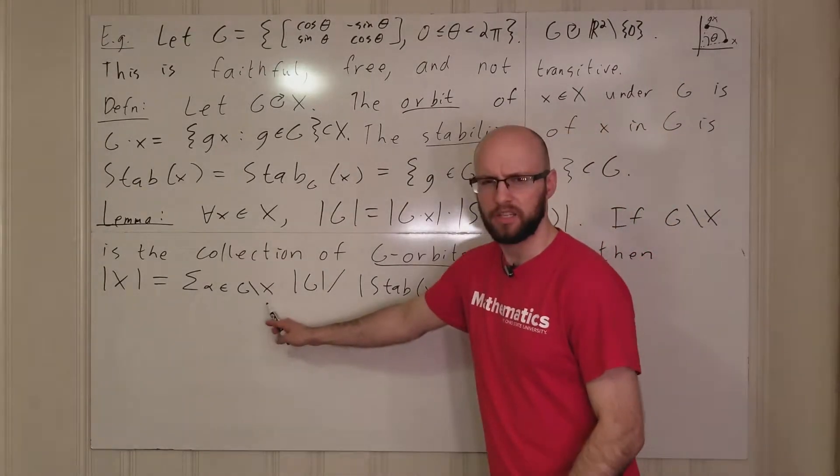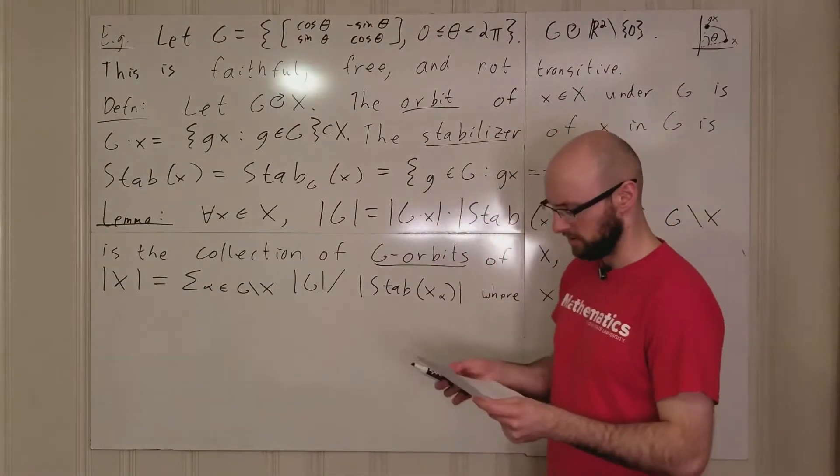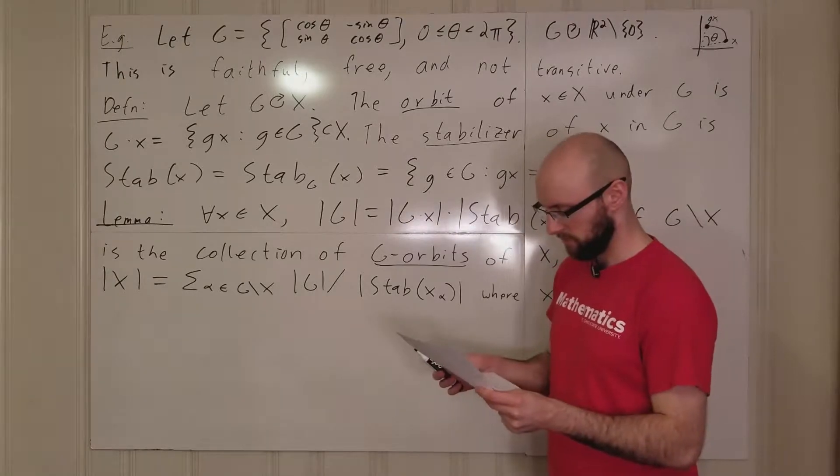Where x alpha is just some chosen representative of the particular g orbit. Did I say left coset here? If I did, I meant g orbit.